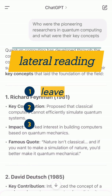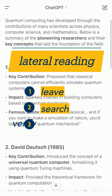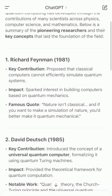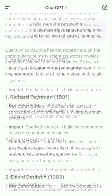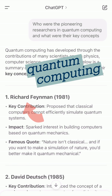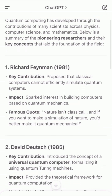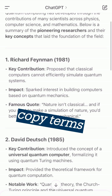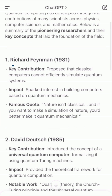where we leave, search, and verify. Say I've used AI to learn more about the pioneering researchers in the field of quantum computing. From my results, I've pulled out the term quantum computing and the name of a key figure in the field, Richard Feynman. The first step is to copy relevant terms or names and leave.